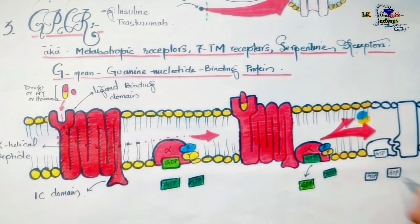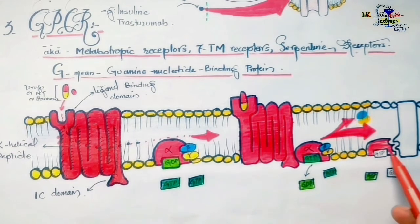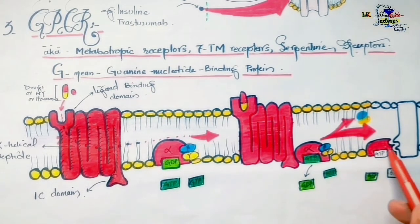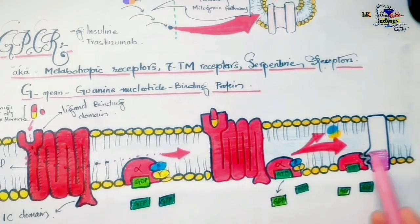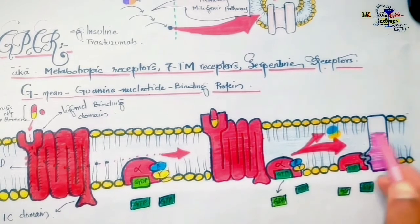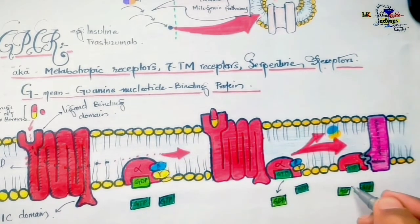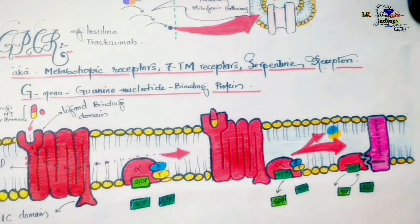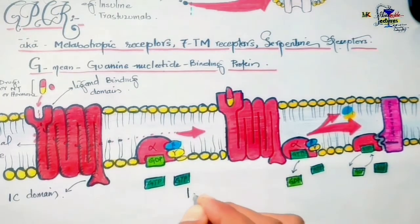Some studies show that the beta-gamma dimer also interacts with effector molecules and shows effects. These receptors exert their effects through activation of second messengers inside the cell, unlike ionotropic receptors and enzyme-linked receptors. The alpha subunit eventually dissociates from the effector molecule by replacing its GTP with GDP, then recombines with the beta-gamma dimer, awaiting another activation. The ligand interacts with the receptor for a shorter time compared to the alpha subunit's interaction with the effector molecule.